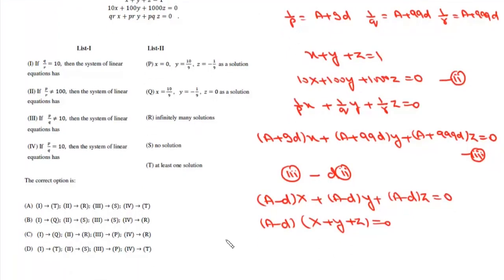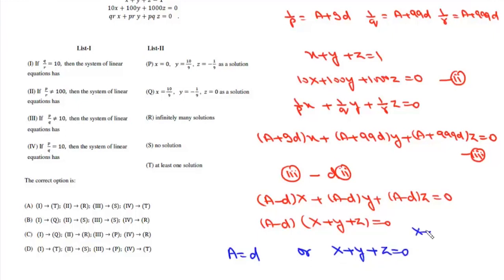From this we get two conditions: either A = d, or X + Y + Z = 0. Since the question states X + Y + Z = 1, the condition X + Y + Z = 0 cannot hold.